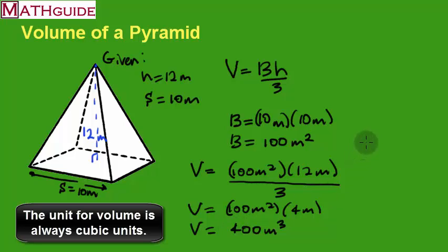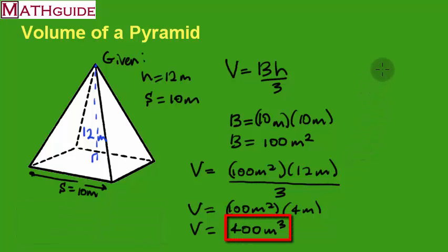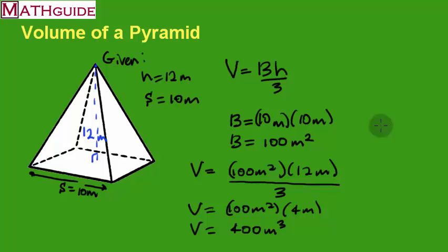And there you have it — that's the volume of this pyramid. This is easier than surface area; you do not need to use the slant height. You just need to know the height of the figure and the area of the base, multiply them, and divide by 3. Make sure you go back to MathGuide.com to check out our other instructional videos, our interactive quizzes, and our text-based lessons. Take care.